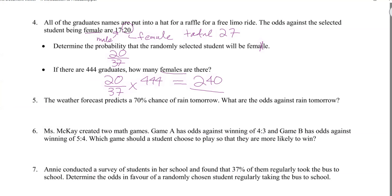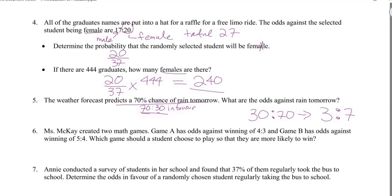The weather forecast predicts a 70% chance of rain tomorrow. What are the odds against rain? If there's a 70% chance of rain, then 30% is against rain. So the odds against rain are 30 to 70, which reduces to 3 to 7. And just to be clear: the odds in favor of rain would be 70 to 30, and the odds against rain are 30 to 70.